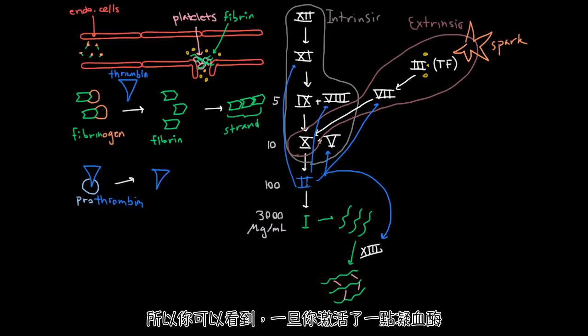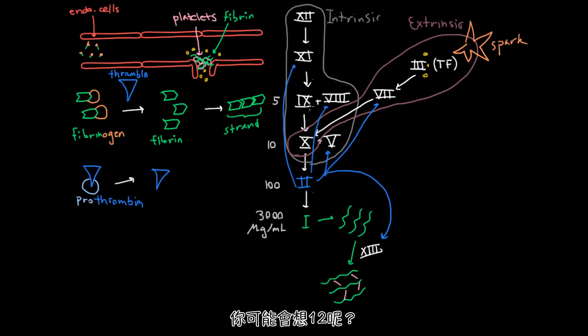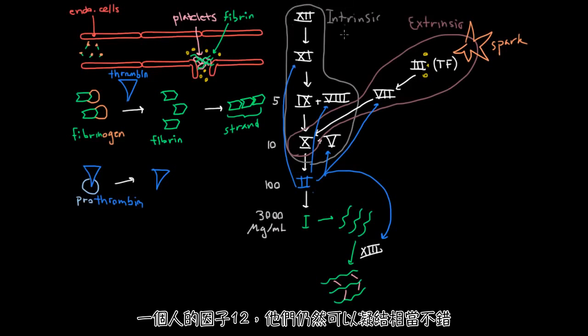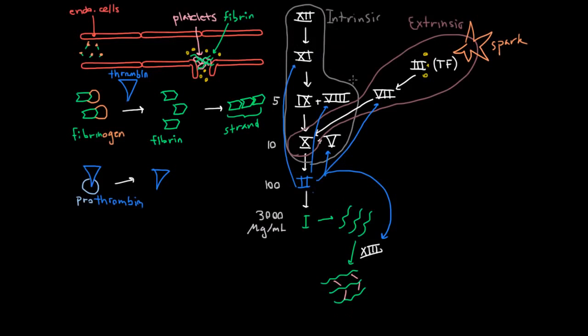So you can see that once you activate a little thrombin, it's going to activate all the necessary things in this intrinsic pathway to get it going. And you might actually be wondering about 12 up there because thrombin is not hitting him. And actually it turns out that if you remove a person's factor 12, they can still clot pretty well. And so it's clear that 12 is not a totally necessary part of this intrinsic pathway.